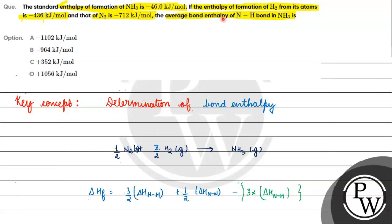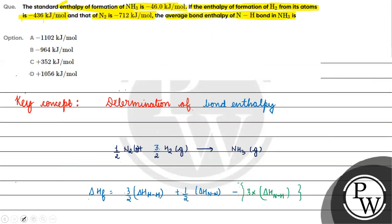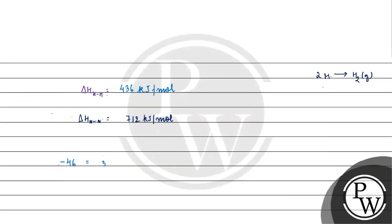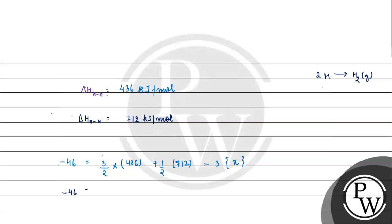हमें average bond enthalpy of N-H bond निकालना है। Standard enthalpy of formation of ammonia दिया है: minus 46. So: minus 46 = (3/2) × bond enthalpy of H-H + (½) × 712 − 3 × X, जहाँ X = average bond enthalpy of N-H bond।